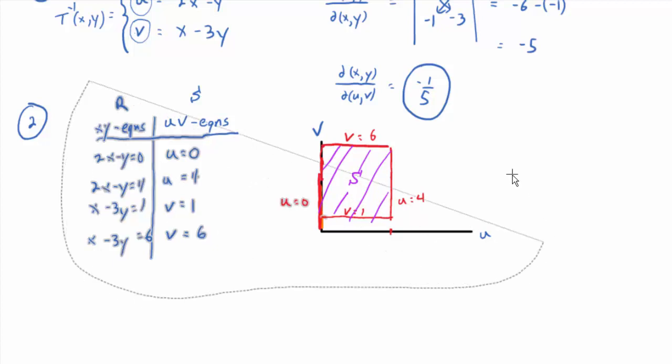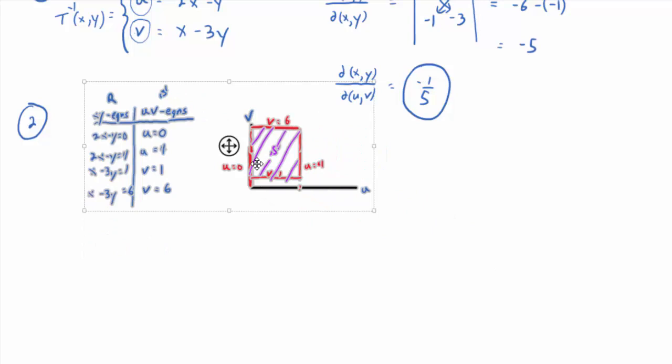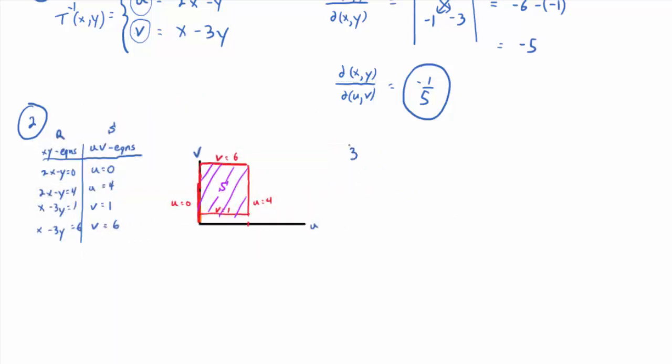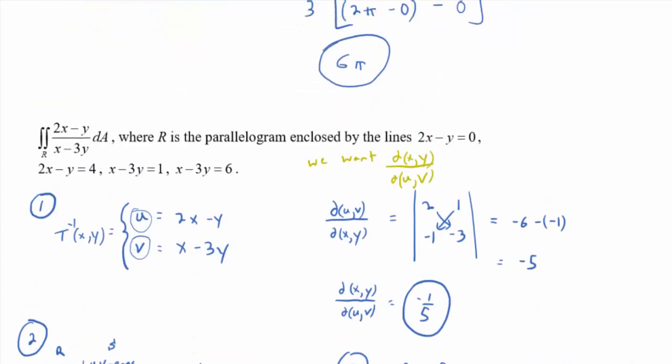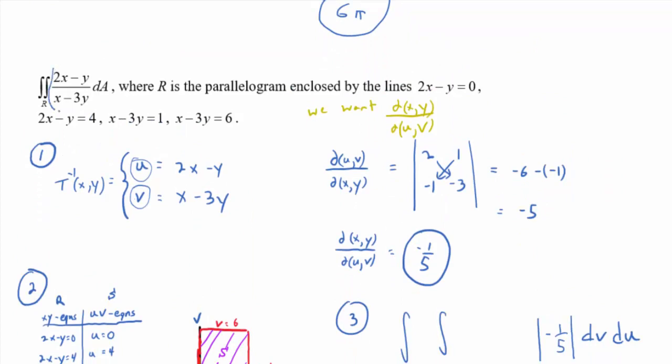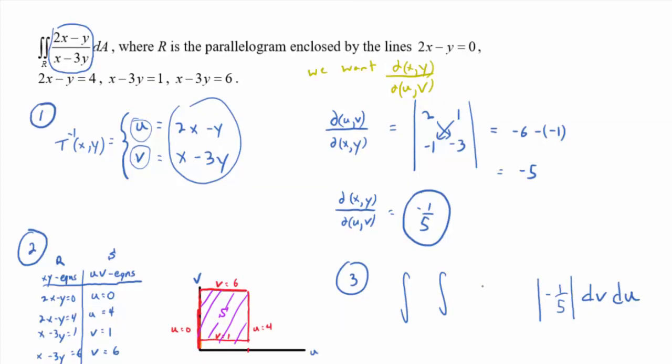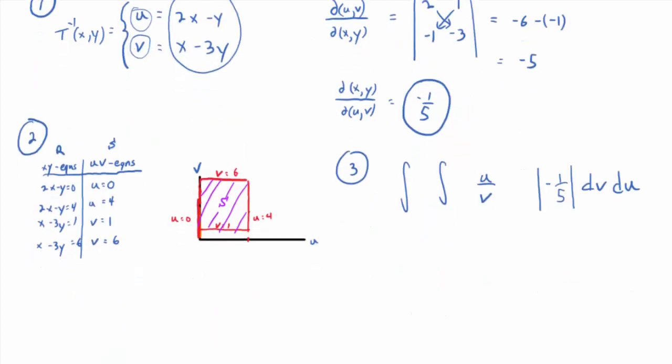Everybody see what s is? So then in step 3, I think I can fit this all on the same screen. If we set up our integrand, okay, double integral, what should we put in right away so we don't forget? The Jacobian. I'll put in the absolute value of negative 1 fifth. I'll go dv du, which is analogous to dy dx. What was the integrand? Oh, what does the integrand become? Based on our transformations? u over v.